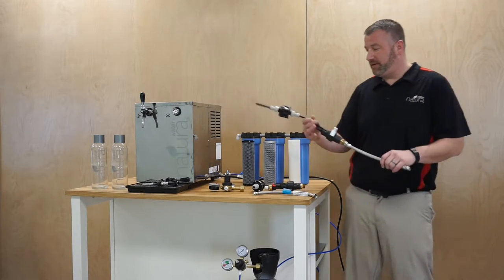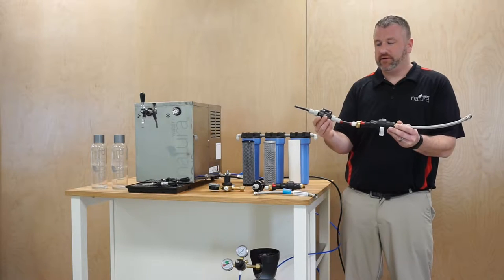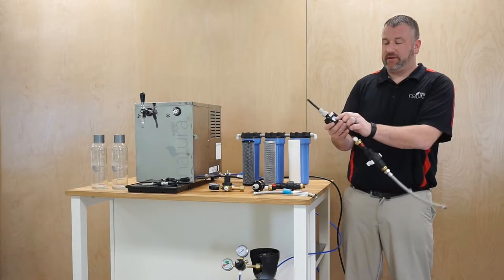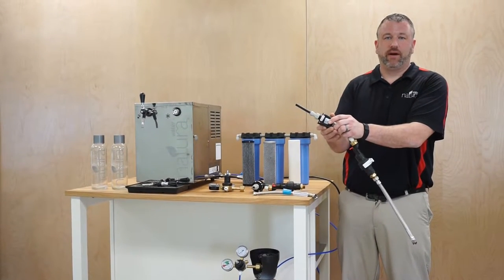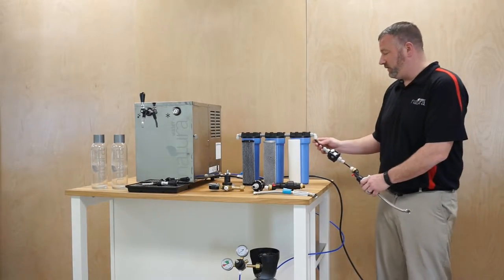Once that's all set up, this is what the main source will look like with your braided hose, your water block, and your pressure reducing valve. Very important that you follow the arrows on the pressure reducing valve and the way that the water flows. Then you would connect it to your inlet of the filter.